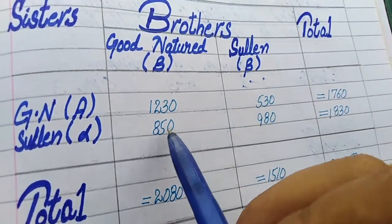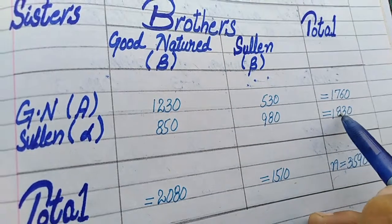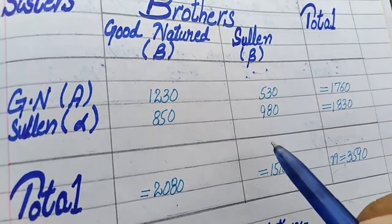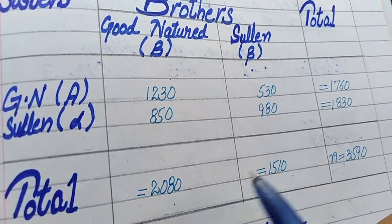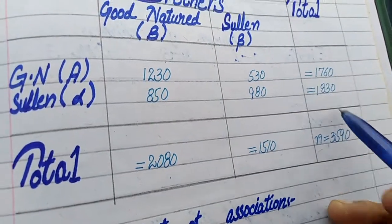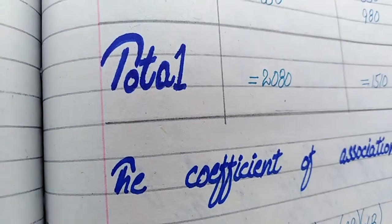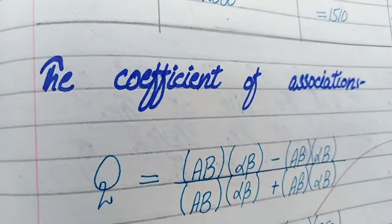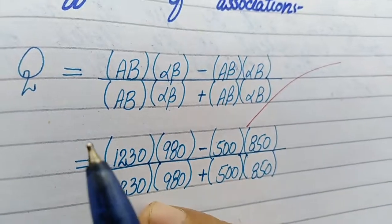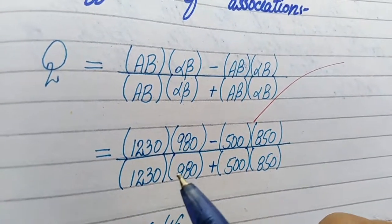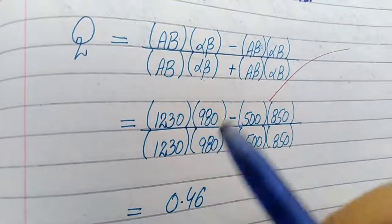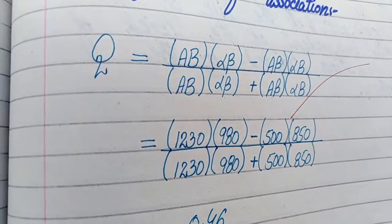Now calculate the row totals, column totals, and the grand total. This is a question of association — we will use the association formula that we have been using in this practical. You can now proceed with the calculation.